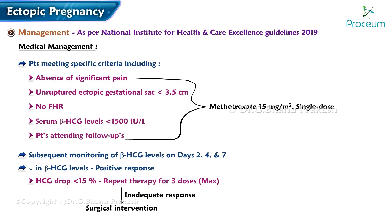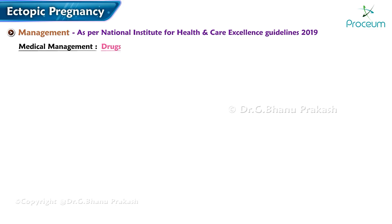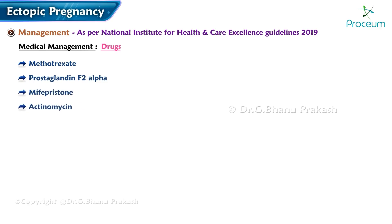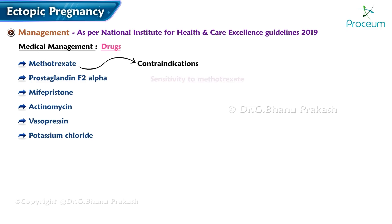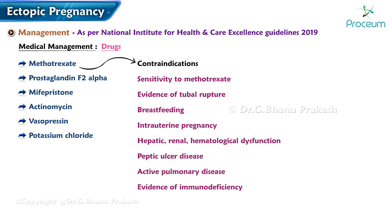If the response remains inadequate, surgical intervention is considered. Drugs used in medical management include methotrexate, prostaglandin F2-alpha, mifepristone, actinomycin D, vasopressin, and potassium chloride. Contraindications to methotrexate include: sensitivity to methotrexate, evidence of tubal rupture, breastfeeding, intrauterine pregnancy, hepatic, renal, or hematological dysfunction, peptic ulcer disease, active pulmonary disease, and evidence of immunodeficiency.